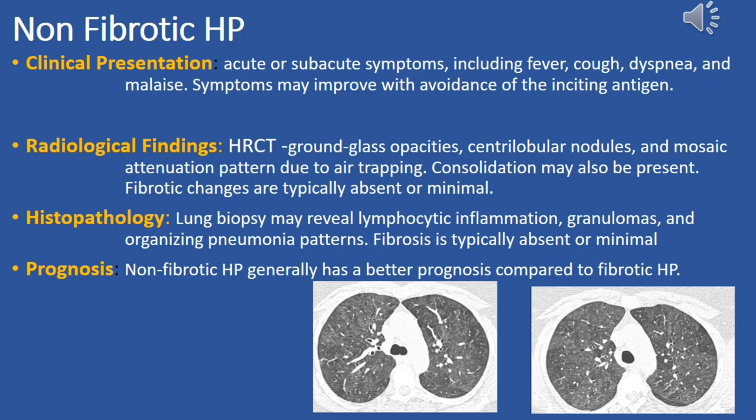Radiological findings on HRCT commonly show ground glass opacities, centrilobular nodules, and a mosaic attenuation pattern due to air trapping. Consolidation may also be present, while fibrotic changes are usually absent or minimal.